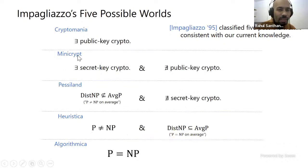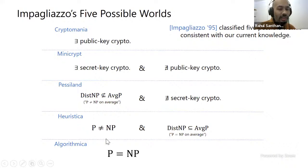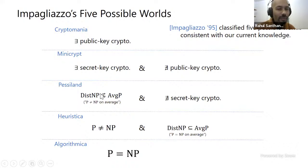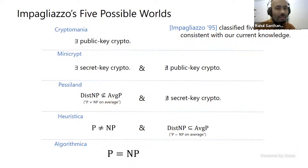In Heuristica, you have worst-case hardness of NP but average-case easiness. There's Pessiland, named because it's the worst of all possible worlds: you have average case hardness so you can't solve problems on average, and at the same time you don't have cryptography. One nice thing about complexity theory is a win-win situation: either a problem is easy, or if it's hard it can be used for pseudo-randomness and cryptography. Pessiland is a world where that doesn't happen to the extent you'd like.